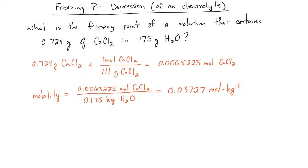Once we've calculated the molality of the calcium chloride in the solution, we have to take into account the fact that when calcium chloride dissociates, you're going to get three particles: one calcium ion and two chloride ions.